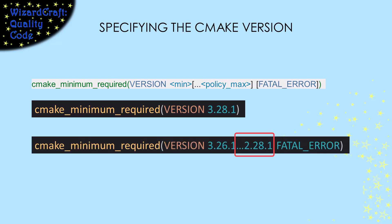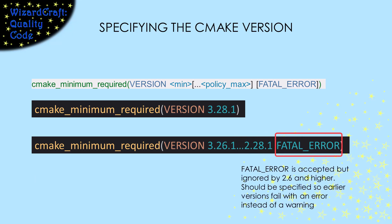If you like, you can also specify a max version. If you're really thorough, you can add FATAL_ERROR. For versions after 2.4, not being able to meet the requirements is always a fatal error, so this is just ignored after version 2.6. However, if there's a chance you could run into a version earlier than that, having FATAL_ERROR will make sure that CMake will always make not being able to meet your requirements crash the build process.